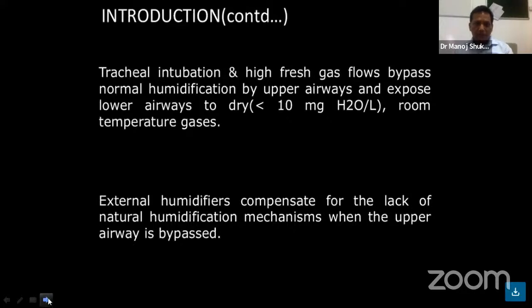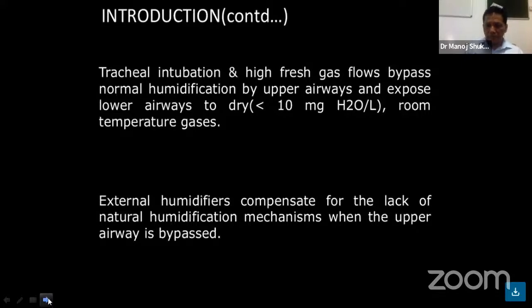In the press case flow, bypass the normal humidification of upper airway and expose the lower airway to dry and room temperature gases. External humidifiers compensate for the lack of natural humidification mechanism when the upper airway is bypassed.